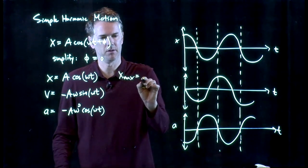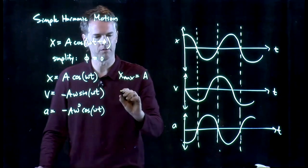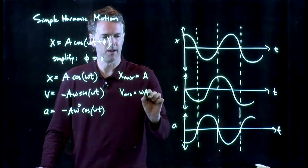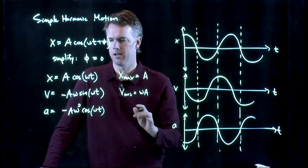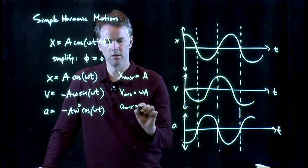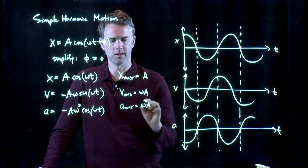And so let's just be explicit. X max is of course a. V max in terms of amplitude, don't worry about the sign, it's omega a. And a max is omega squared times a.